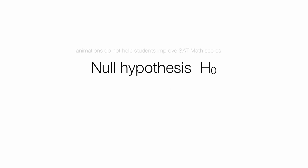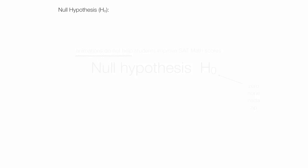In this next example, the null hypothesis is: animations do not help students improve SAT math scores — my animations have no impact, zero effect, none, no impact. Animations have no effect, like a treatment you may be doing that has no effect. I want to prove beyond a shadow of a doubt that my animations work. So I make a table.